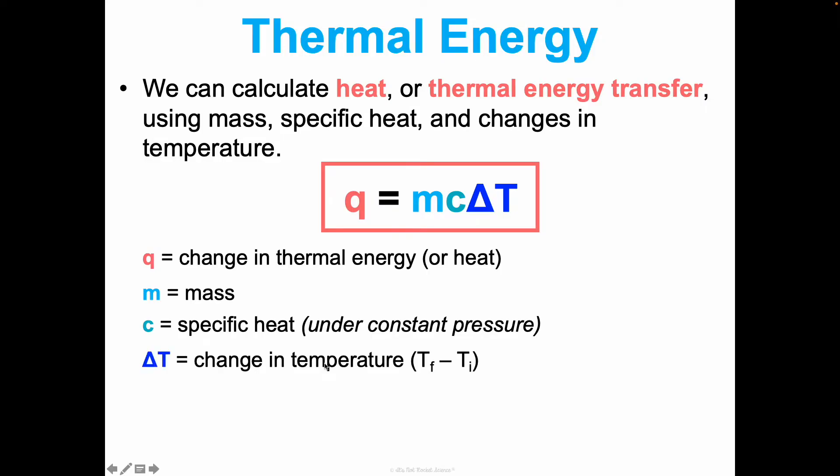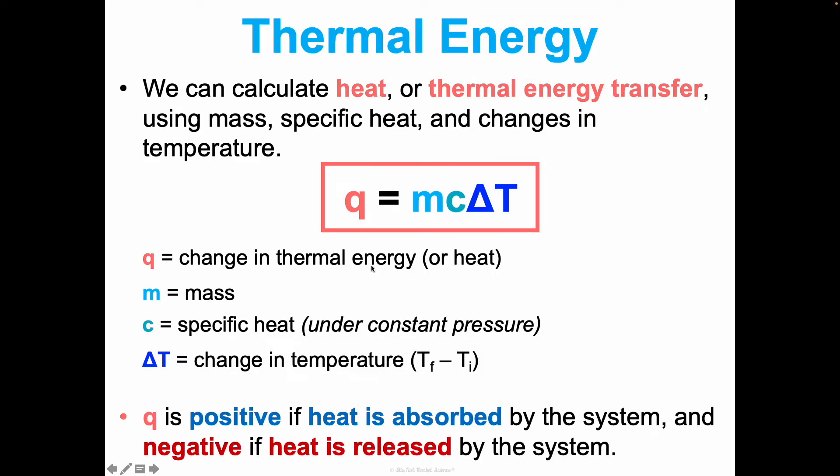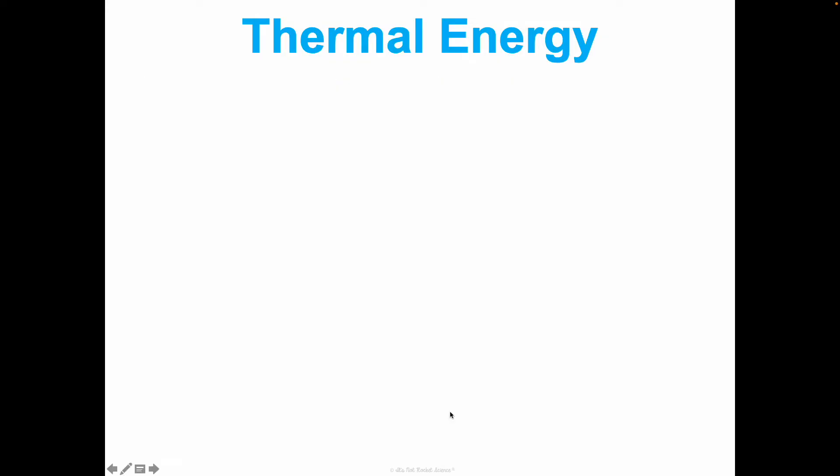Delta T is your change in temperature. So your final temperature minus your initial temperature. Whatever the units are in your specific heat, like if specific heat is given in joules per grams times Kelvin, you need to make sure that your thermal energy is in joules, your mass is in grams, and your temperature is in Kelvins. We want to change all of these other things so they align up with our specific heat units. If you do this calculation, you may end up, depending on the temperature, with a positive Q or a negative Q, and that's fine. If Q is positive, all that means is that the system absorbed heat overall. If it's negative, it means that the heat was released by the system. We'll talk more about this in concept two.